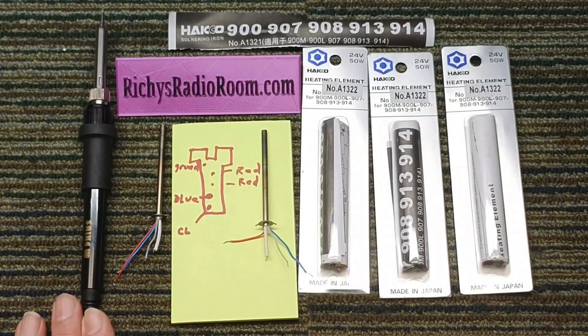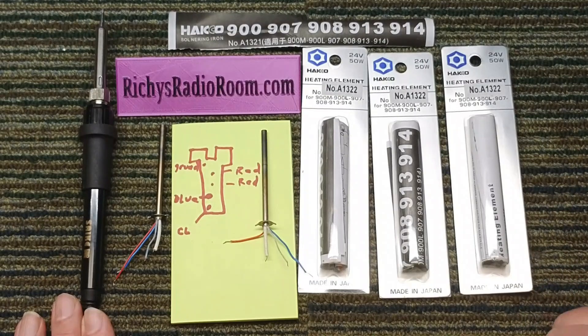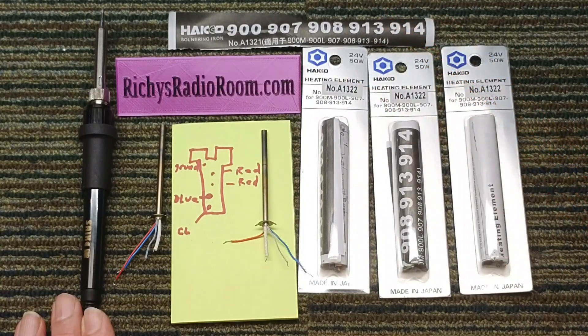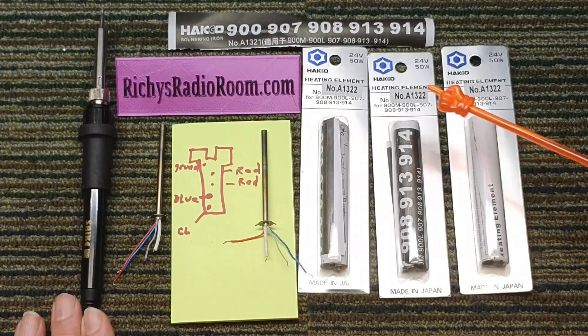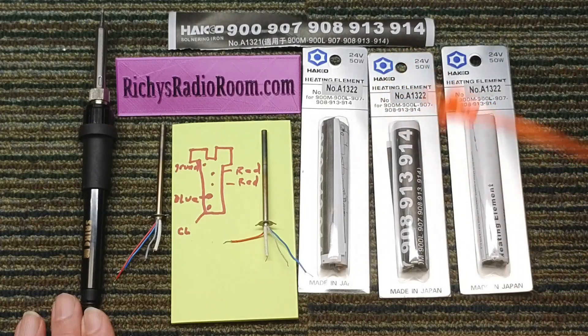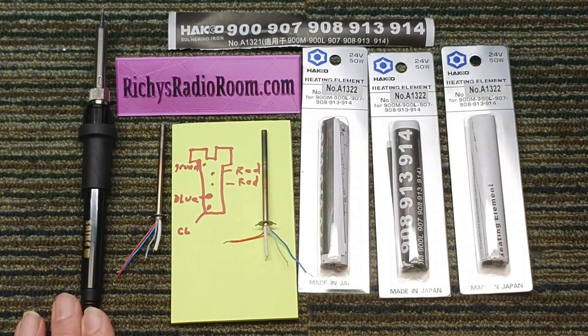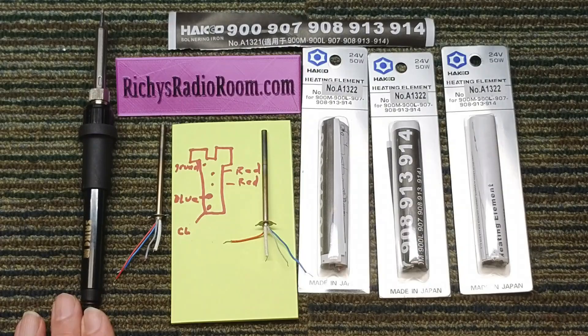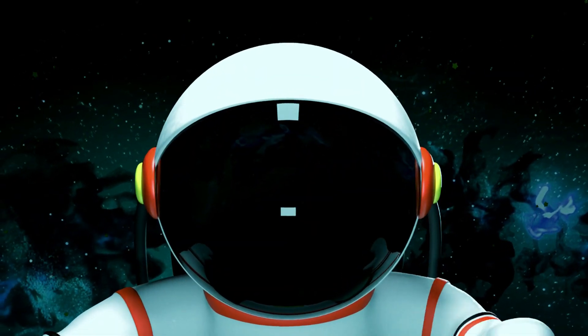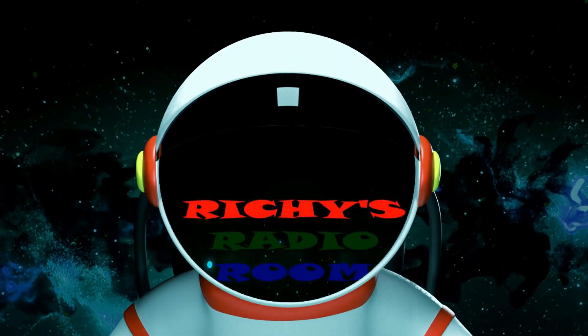So I hope that helped you out. So for a little over two dollars a piece, you can just buy your elements and replace your heating element. Thanks for watching. This is Richie's radio room.